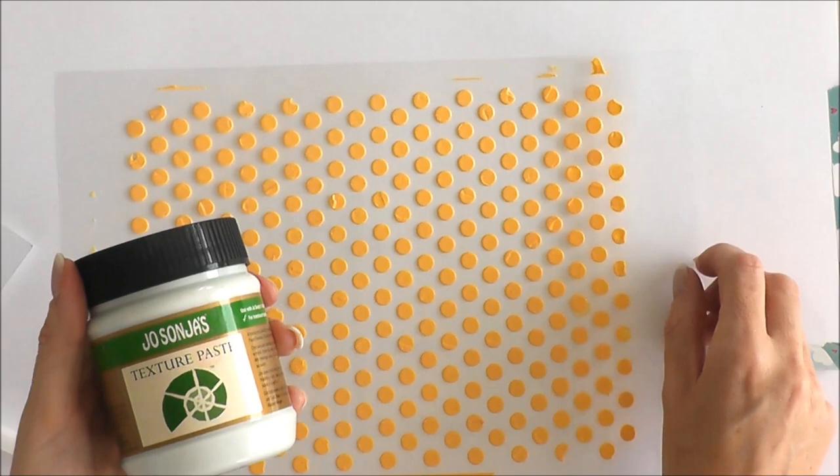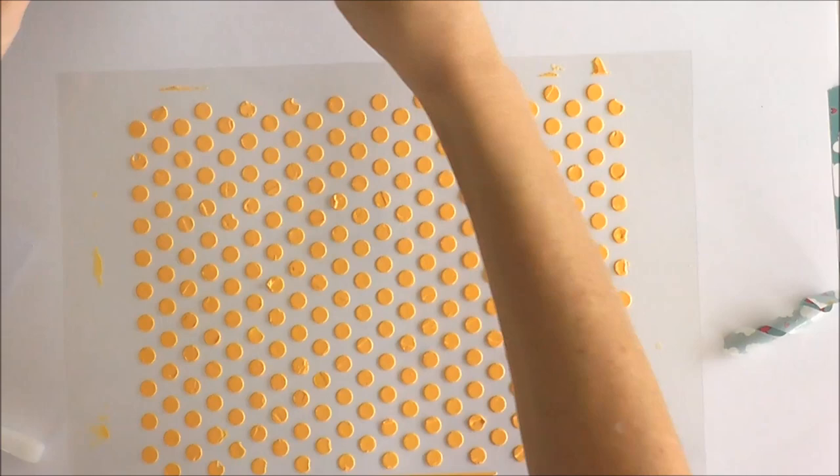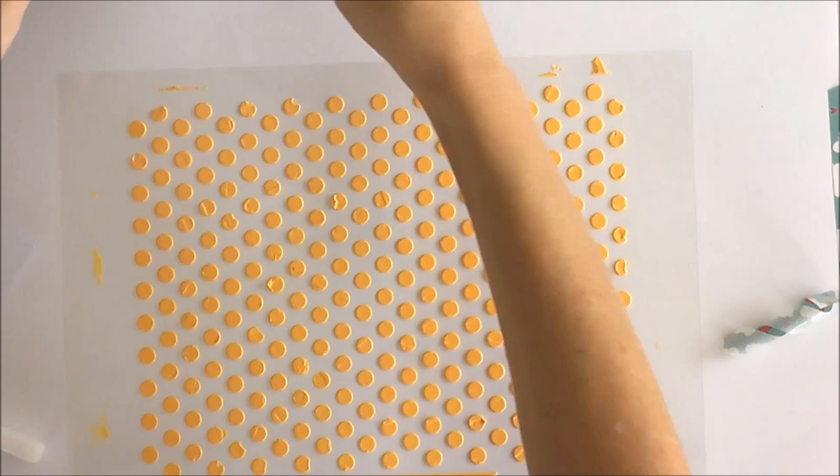So once again, I used some texture paste and some color shine. Of course I used the mustard, yellow is my favorite. Mixed them together, laid my stencil down, smoothed it over with my palette knife, and now I just need to leave that to dry and I can go ahead and use it on a project. Thanks for watching.